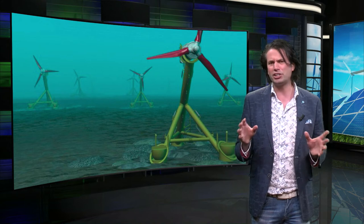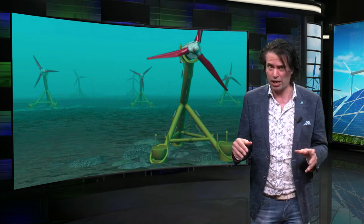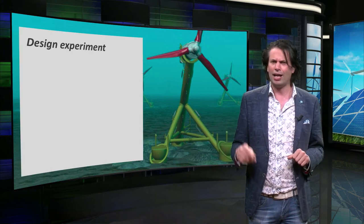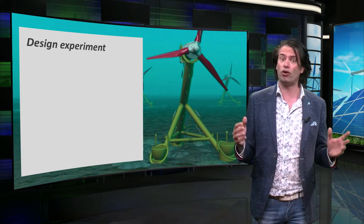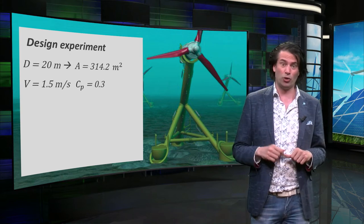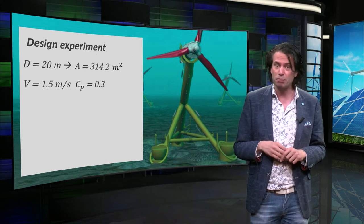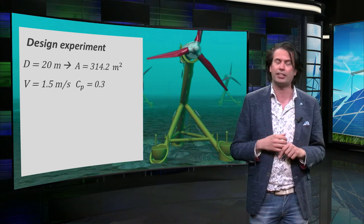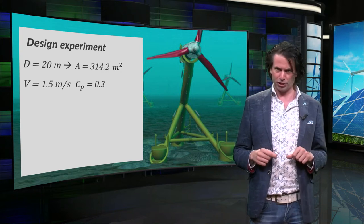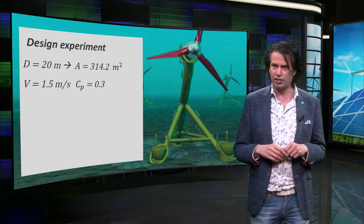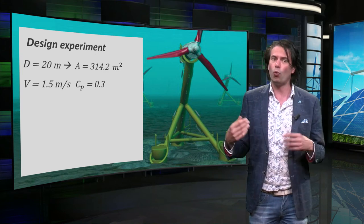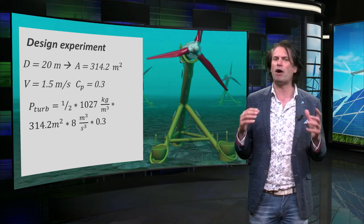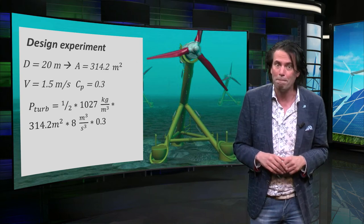So how much power is this for a turbine underwater? Let's do a small design calculation together. Let's imagine a turbine with a diameter of 20 meters, an ocean current velocity of 1.5 meters per second — which is below the average of the Gulf Stream in the Atlantic Ocean. We take a power coefficient of 0.3, which is a fairly conservative estimation compared to wind and other hydro turbines. Using these numbers, we find a power of the turbine of 0.4 megawatts.